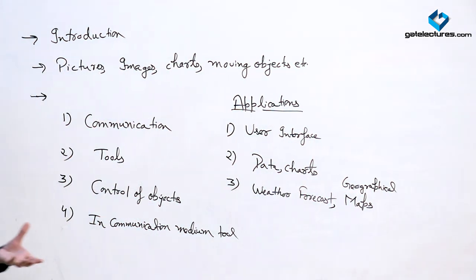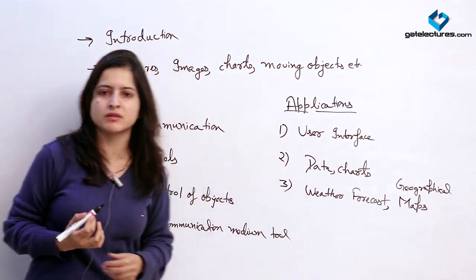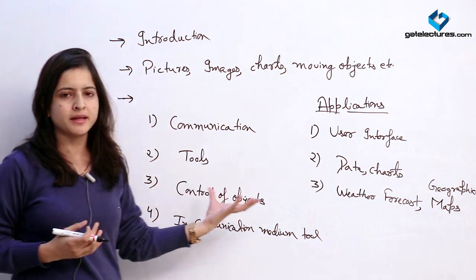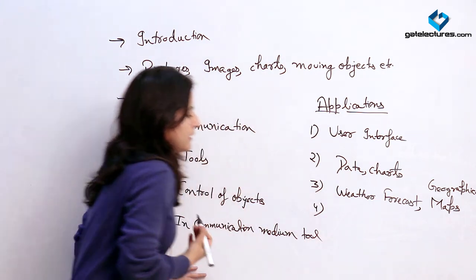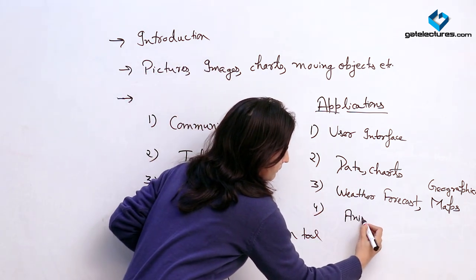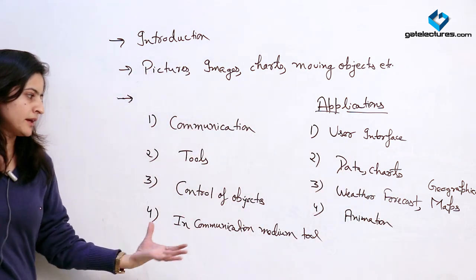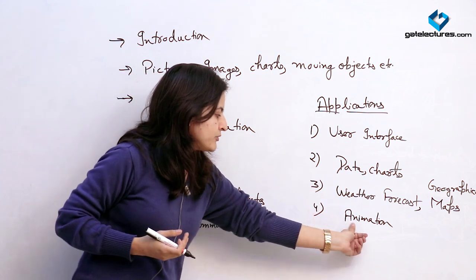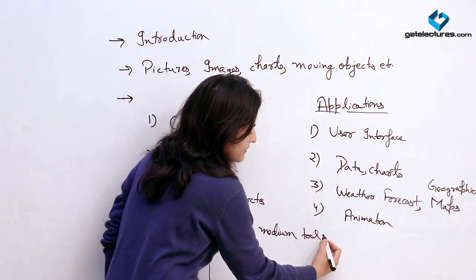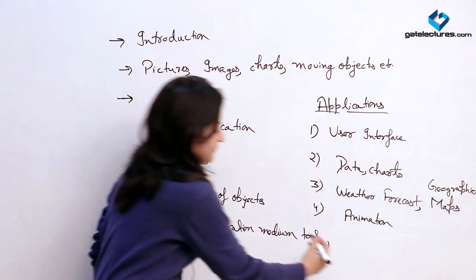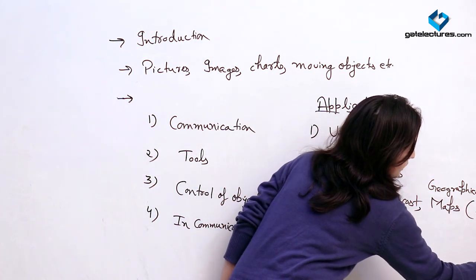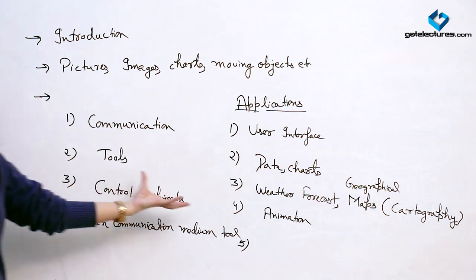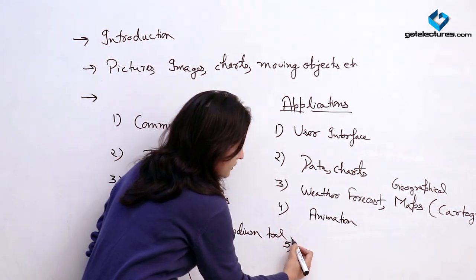The third application is the representation of geographical maps, roads, routes, and weather forecasts. For all these representations we are using interactive tools — like in Google Maps, we are having images and tools which represent all the routes and paths we are considering. Another application is animation. As we know, in the entertainment industry animation is the most important part right now, and for creating these animation objects, representing them, and storing them, we are using computer graphics. This is also called cartography — weather forecasts and all map images are generally called cartography.